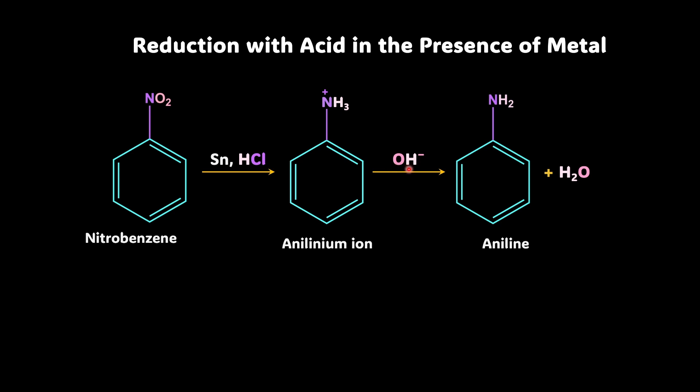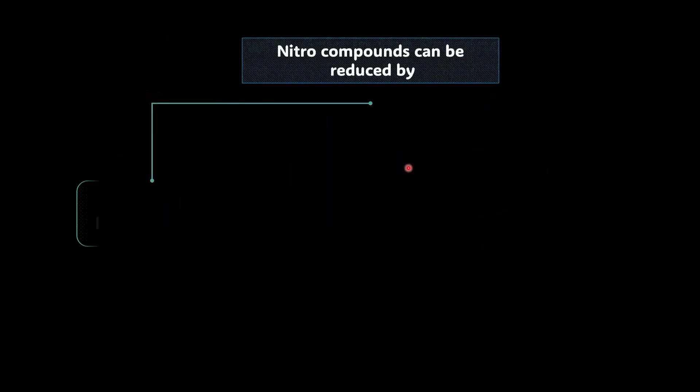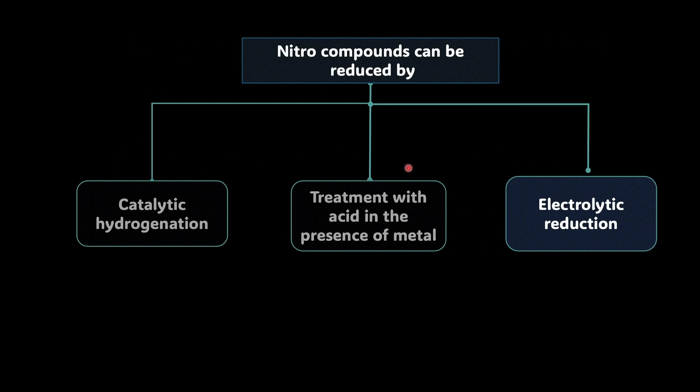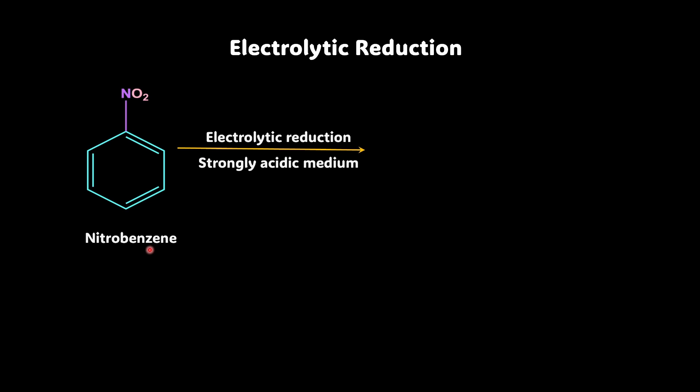Now, the third important method that can be used here is the electrolytic reduction. So electrolytic reduction is quite interesting. Depending on what kind of a medium you're taking, the product is going to change. For example, if you take nitrobenzene and you carry out electrolytic reduction, but in strongly acidic medium, what you get is this. Check. N-phenyl hydroxyl amine. So this is a hydroxyl amine group, NHOH.